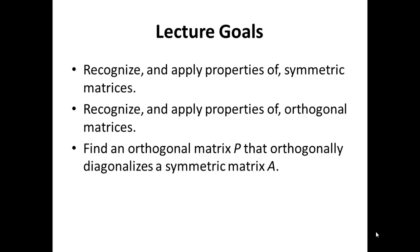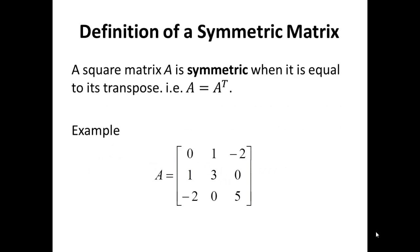And thirdly, find an orthogonal matrix P that orthogonally diagonalizes a symmetric matrix A. Let's start off with a very simple definition, something we already know. Recall that the matrix A is said to be symmetric if A equals A transpose.